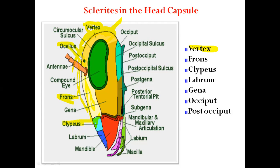The clypeus is a broad plate-like structure which lies immediately anterior to the frons. It is a broad, free plate-like structure and forms the element of the clypeus sclerite.